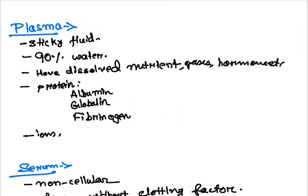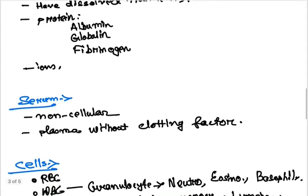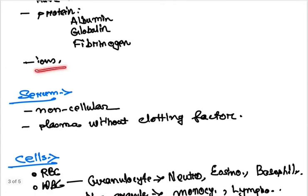Albumin is the blood carrier, globulin mainly consists of immunoglobulins, and fibrinogen is part of the clotting protein. Predominant ions include sodium, potassium, calcium, magnesium, and chlorine.